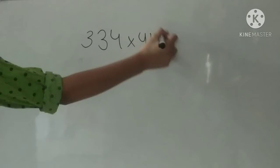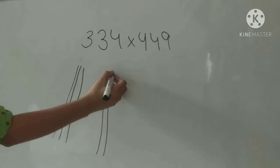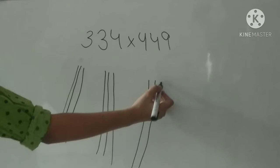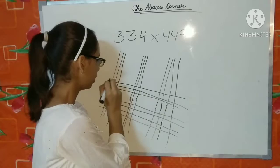So guys let us start with some small numbers like 334 into 449. So 3 lines for 3: 1, 2, 3, then again 3 lines for 3: 1, 2, 3. 4 lines for 4: 1, 2, 3, 4. Again 1, 2, 3, 4. So 4 lines for 4, again 1, 2, 3, 4. Then 9 lines for 9.